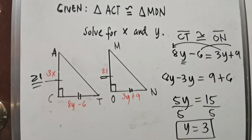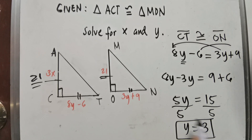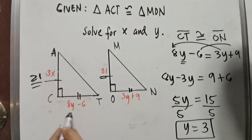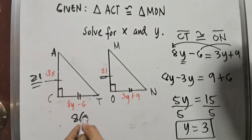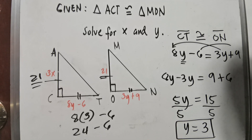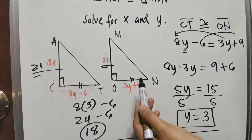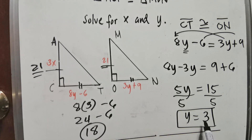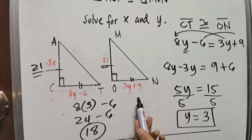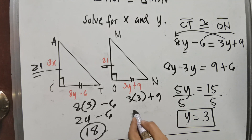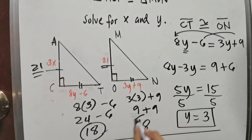Now to get the measure of the side, substitute Y equals 3 into 8Y minus 6. That gives us 8 times 3 minus 6, which is 24 minus 6, equals 18. For the other triangle, 3Y plus 9 becomes 3 times 3 plus 9, which is 9 plus 9, also equals 18. Since they are congruent, both measures match.